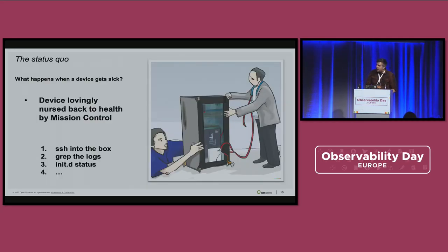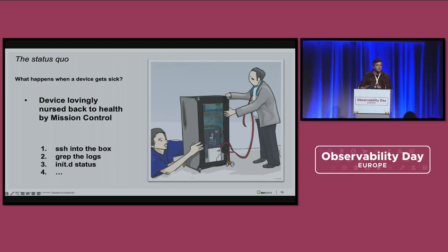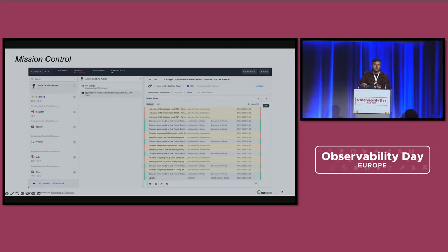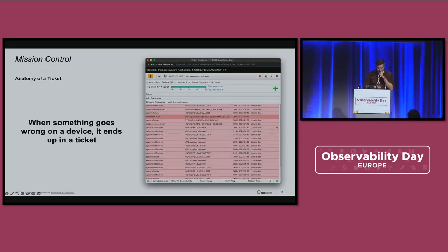Now, what happens when a device gets sick? They're nursed back to health by mission control. It basically follows the same recipe: you log into the box, you grab the logs, you check the service statuses, and you do your Linux diagnostic stuff. This is how mission control looks. You have tickets which come in — tickets can either be made by a customer or they can be made automatically by the monitoring pipeline. When something goes wrong, it ends up in a ticket — that's what you take away from that.